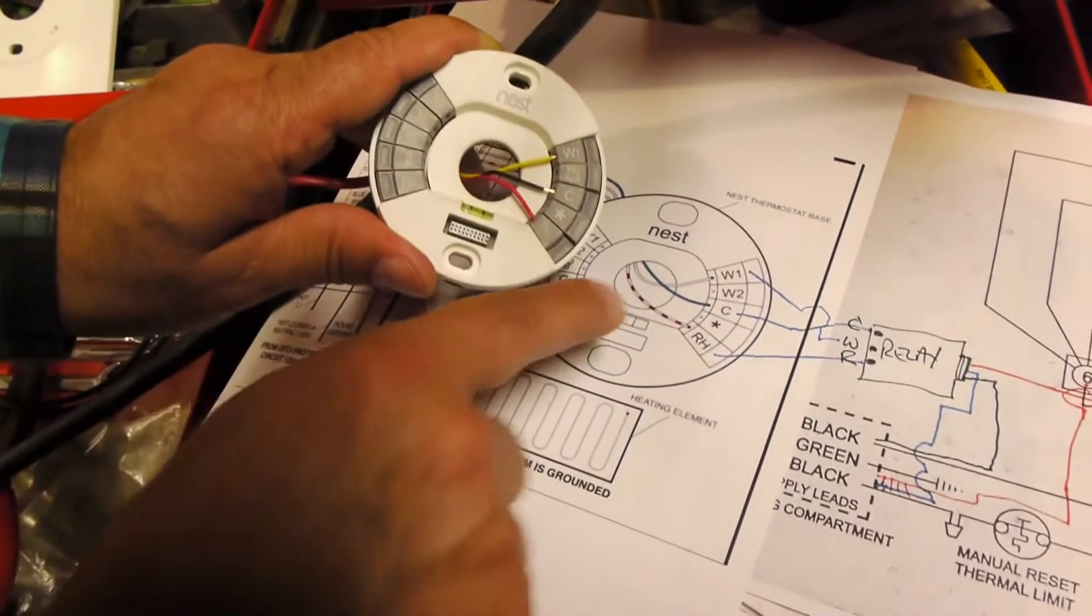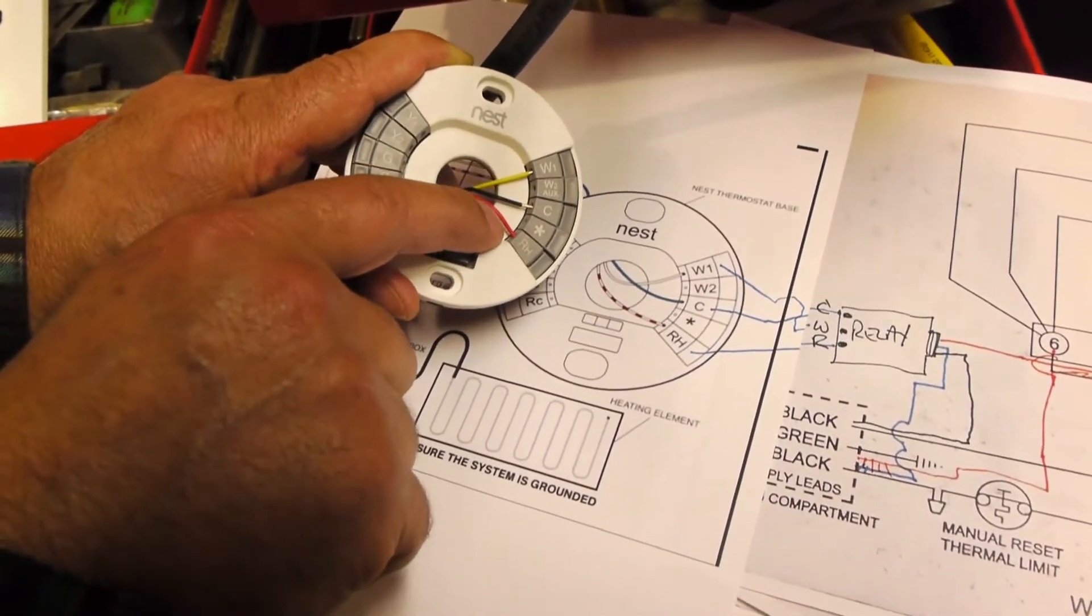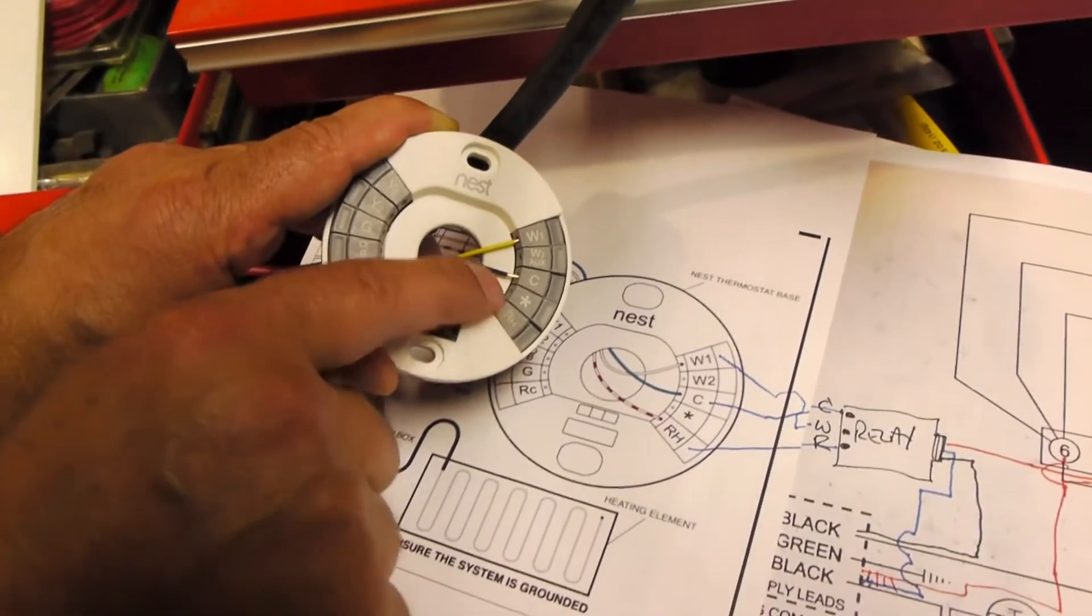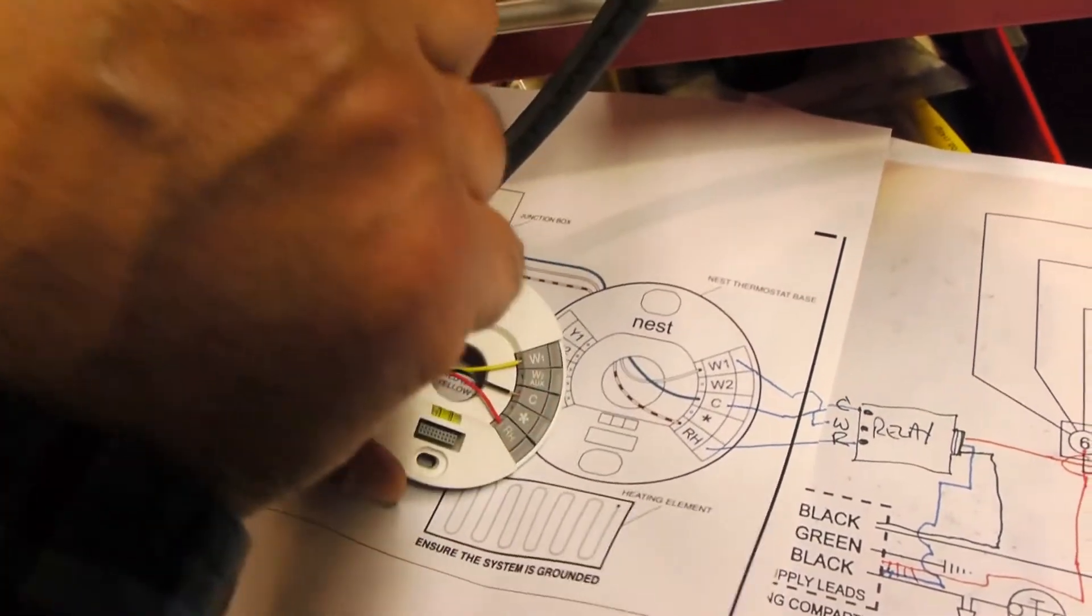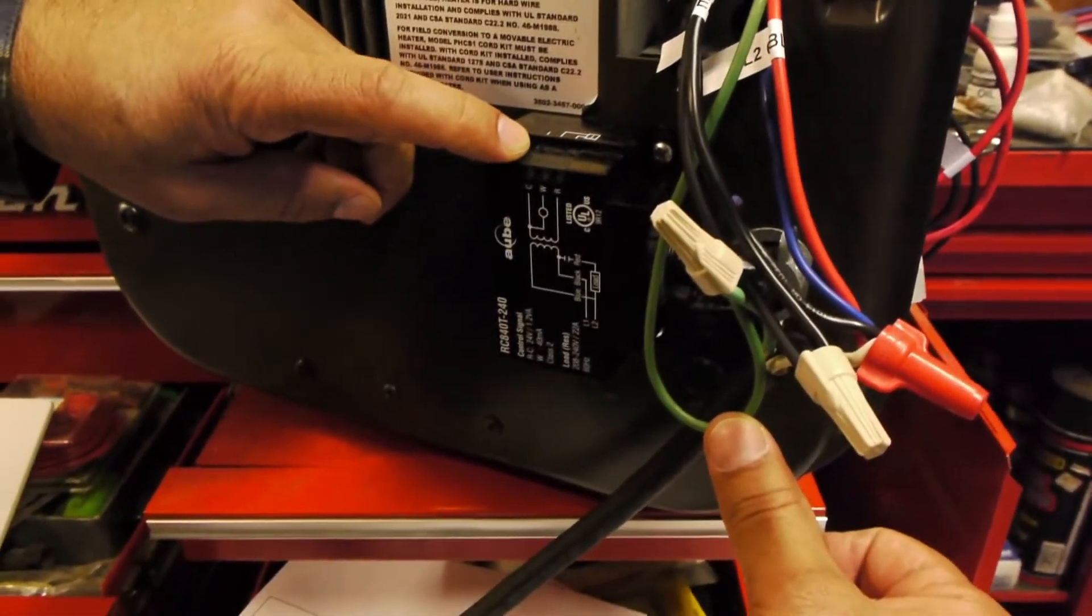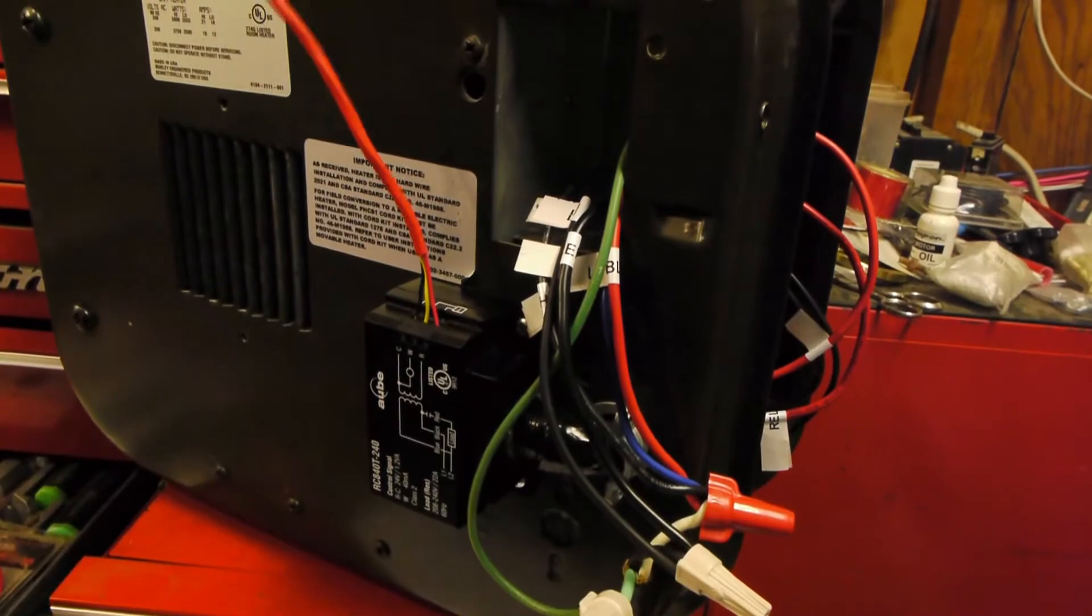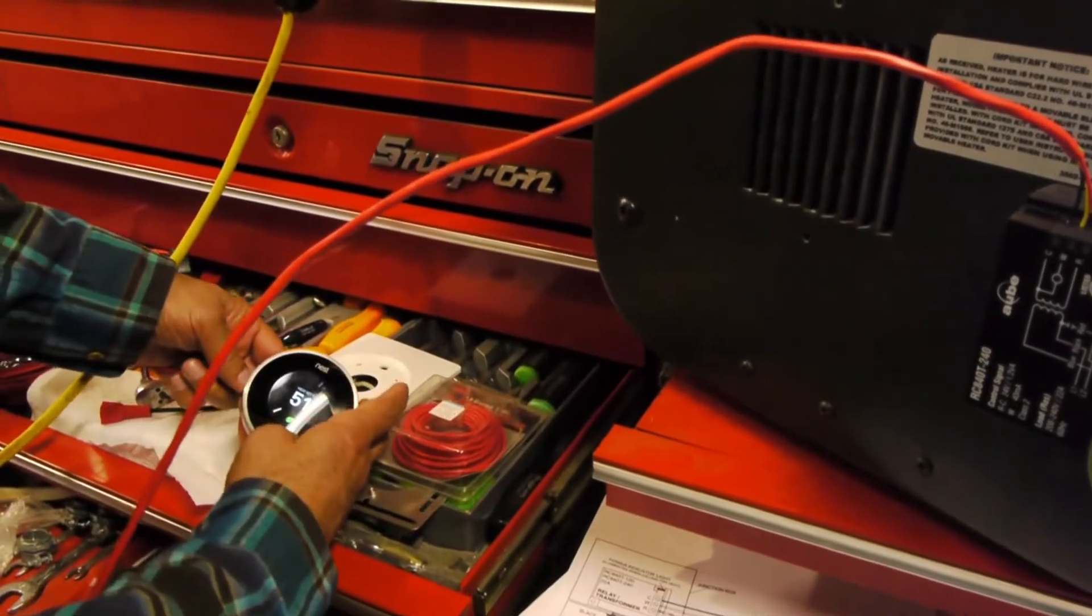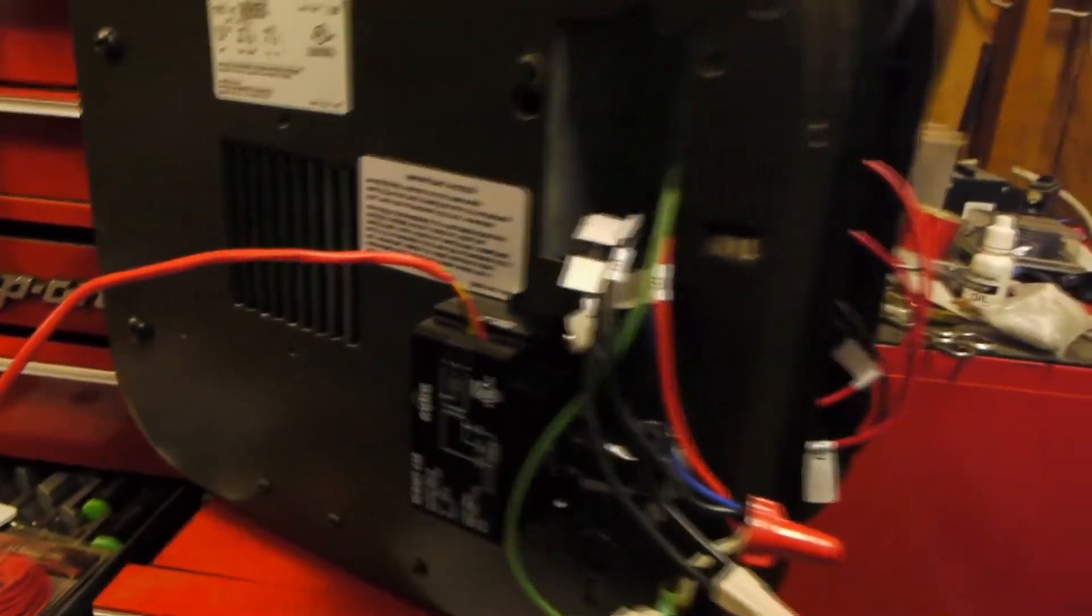So now we're going to hook up the nest. And following the same diagrams I had on the diagram before, we're going to use the W1, the C, and the RH. So the W1 I'm going to use yellow. The C I'm going to use black. And then the red I'm going to use the RH. So we've hooked it up on the base. And then what we're going to do is we'll go up to the thermostat here. And we're going to run the same colors there. So we've got the thermostat wires hooked up to the relay. And I've got the, I'm going to set over to the nest over here now. And let's spin this thing around and see if we're good to go.